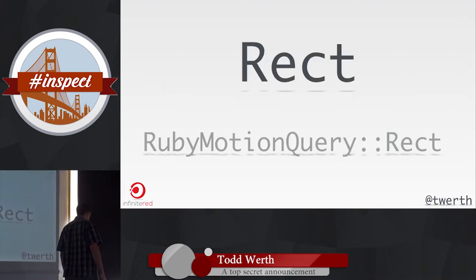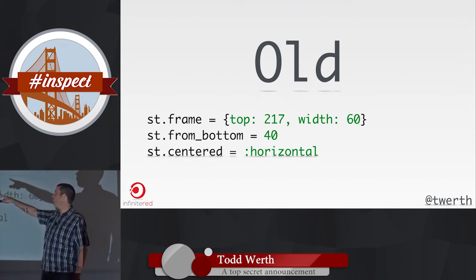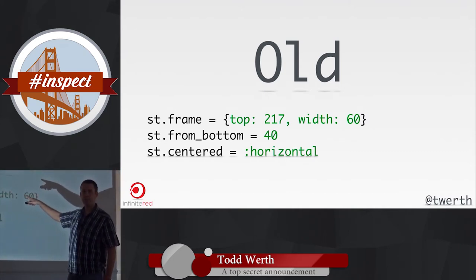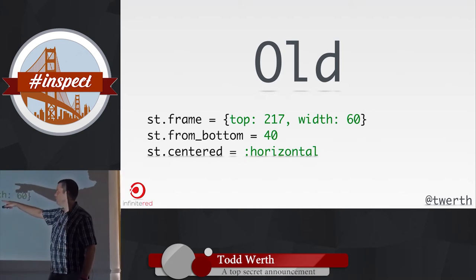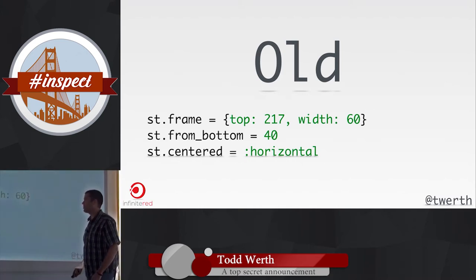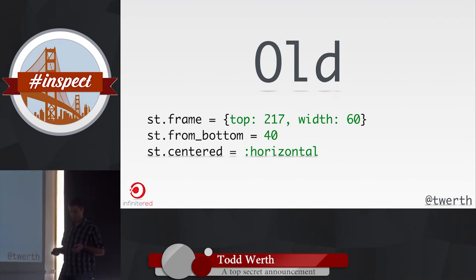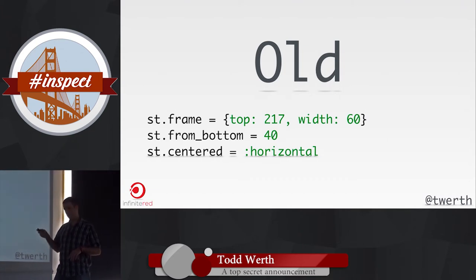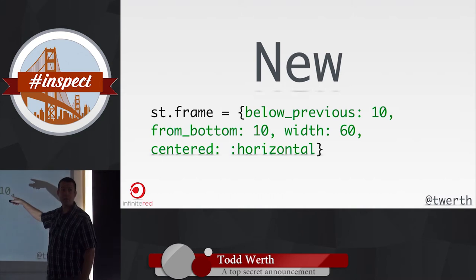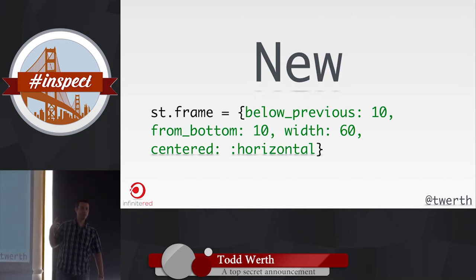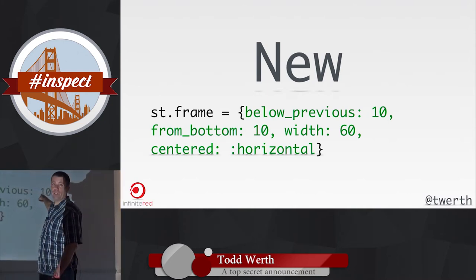Rectangle — this is new. Originally in RMQ styles we had 'frame equals' — literally just one method, very basic. You could patch a hash with top, width, height, etc., and we added new methods like 'from bottom' and 'centered', but they were all separate methods only in styler. We wanted to create a rectangle system that encompassed all that and made an object called RubyMotionQuery::Rect. The new version has 'from bottom' and 'center' inside the hash, so it doesn't matter what order you do it — it's smart and always knows the correct order.